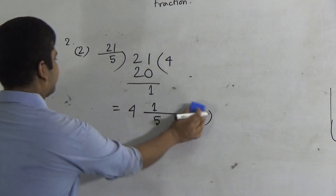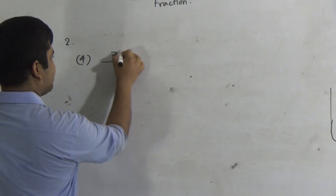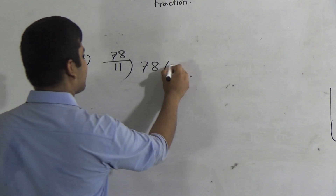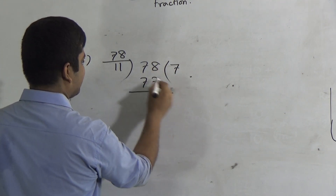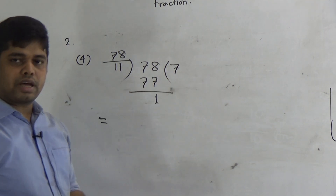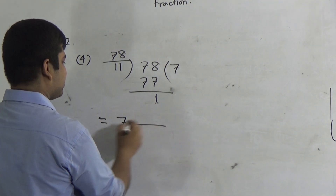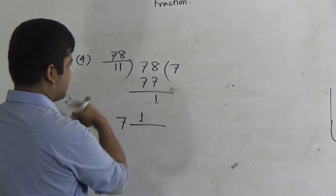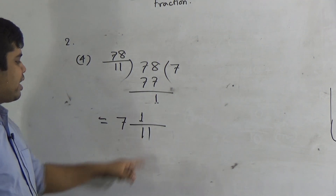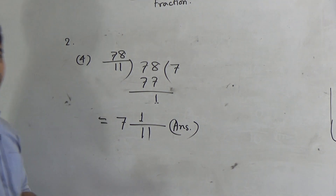Question number 4: 78 by 11. We divide 78 by 11. Eleven goes into 78 seven times: 7 times 11 is 77, remainder 1. The quotient 7 becomes the integer part and the remainder 1 becomes the numerator, while the divisor 11 remains the denominator. So the mixed fraction of 78 by 11 is 7 and 1 by 11.